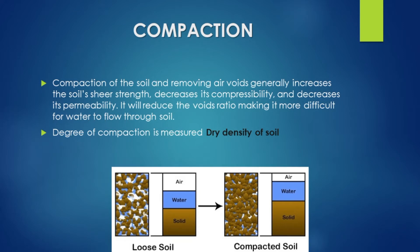The density is the mass divided by the volume. When we do compaction, the air voids will decrease. When the mass of the soil increases, it increases the density. Compaction will increase the density.